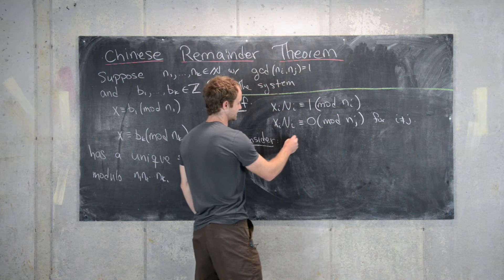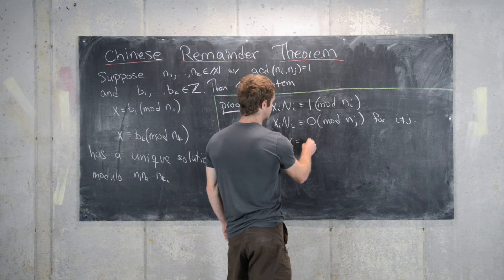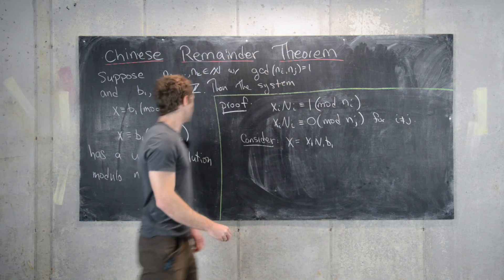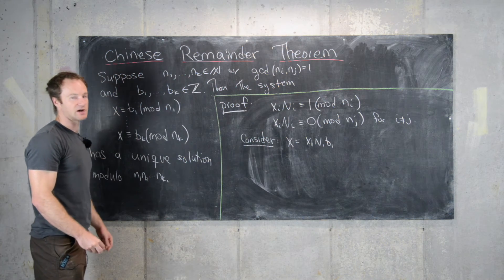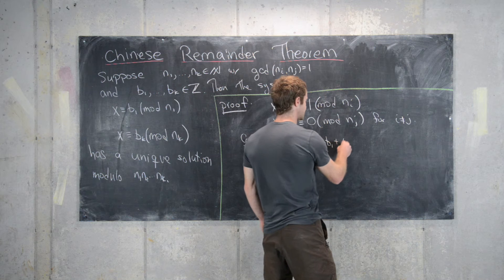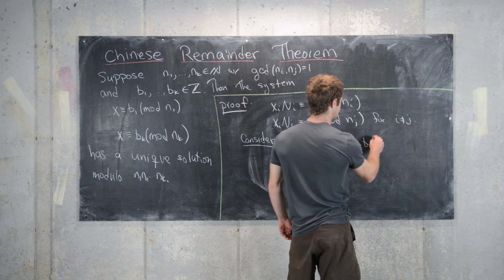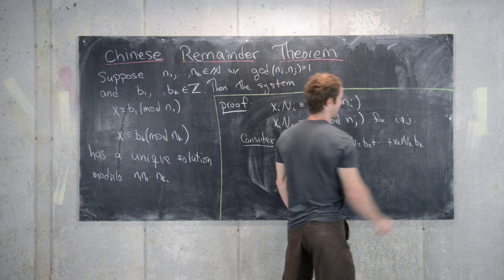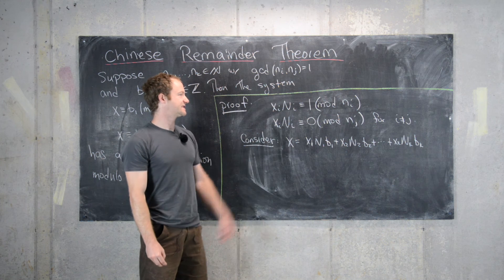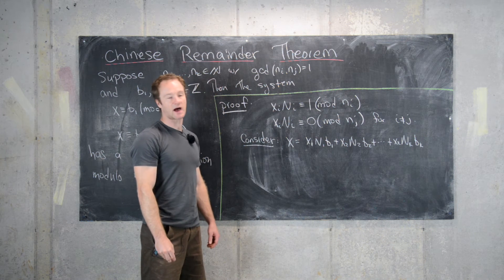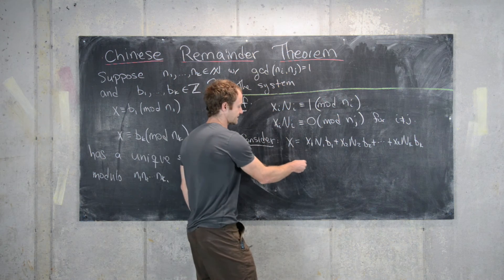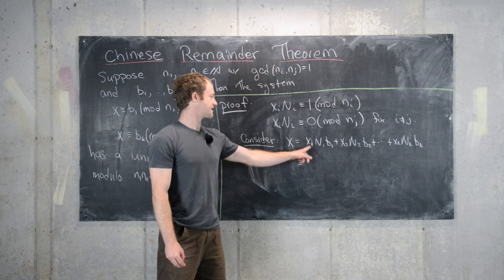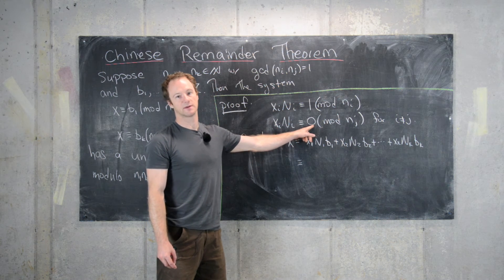Now consider the following number: X = x_1 · N_1 · b_1 + x_2 · N_2 · b_2 + … + x_k · N_k · b_k, where the b's are the right-hand sides of the modular equivalences. Let's consider this expression modulo n_i. Every term where the subscript is not equal to i will be zero, from the observation we just made.